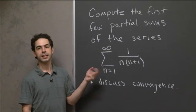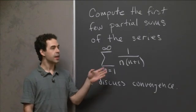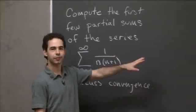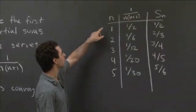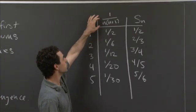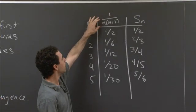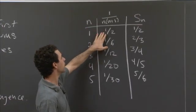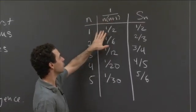So this is a nice series. It has terms that are easy to compute. And I've taken the liberty of computing a few of them in advance, and I've put them up over here. So for n from 1 to 5, the terms that we're adding up are 1 over n times n plus 1. So when n equals 1, that's 1 over 1 times 2, which is a half.